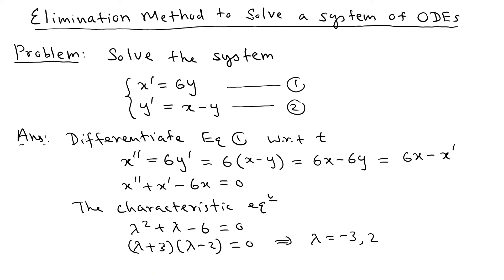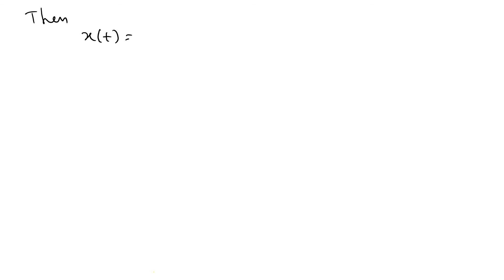Now we can write the general solution for x. So x(t) equals c1 times e to the negative 3t plus c2 times e to the 2t. That is the solution for x. Now, using the first equation which says x prime equals 6y, we can use that to find y easily.